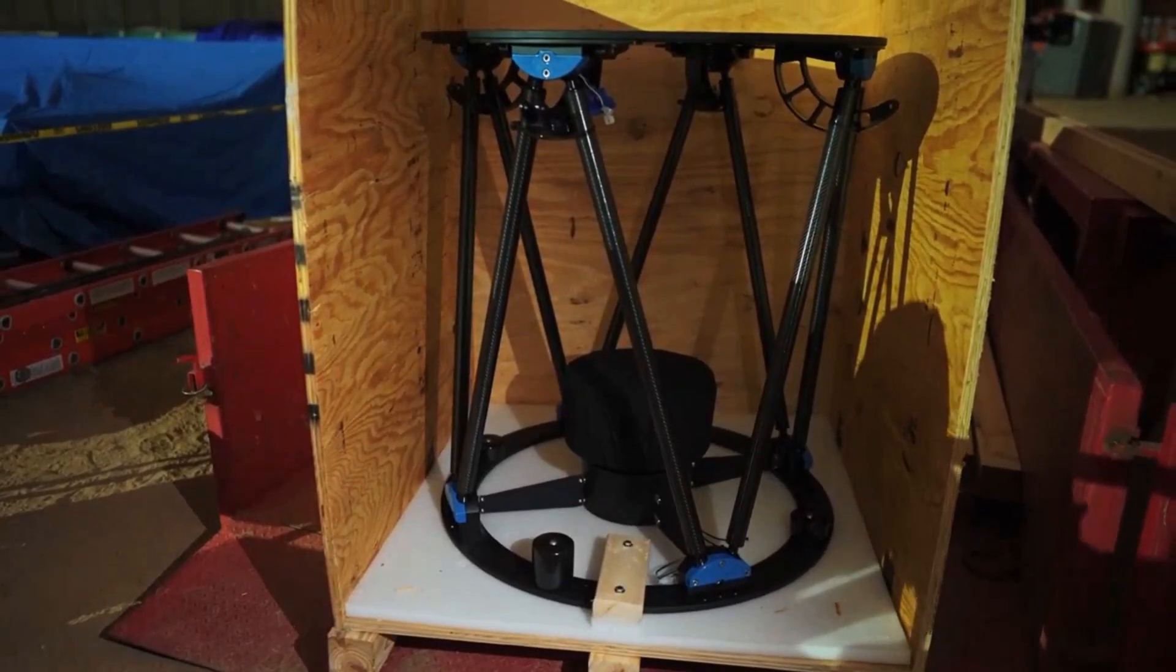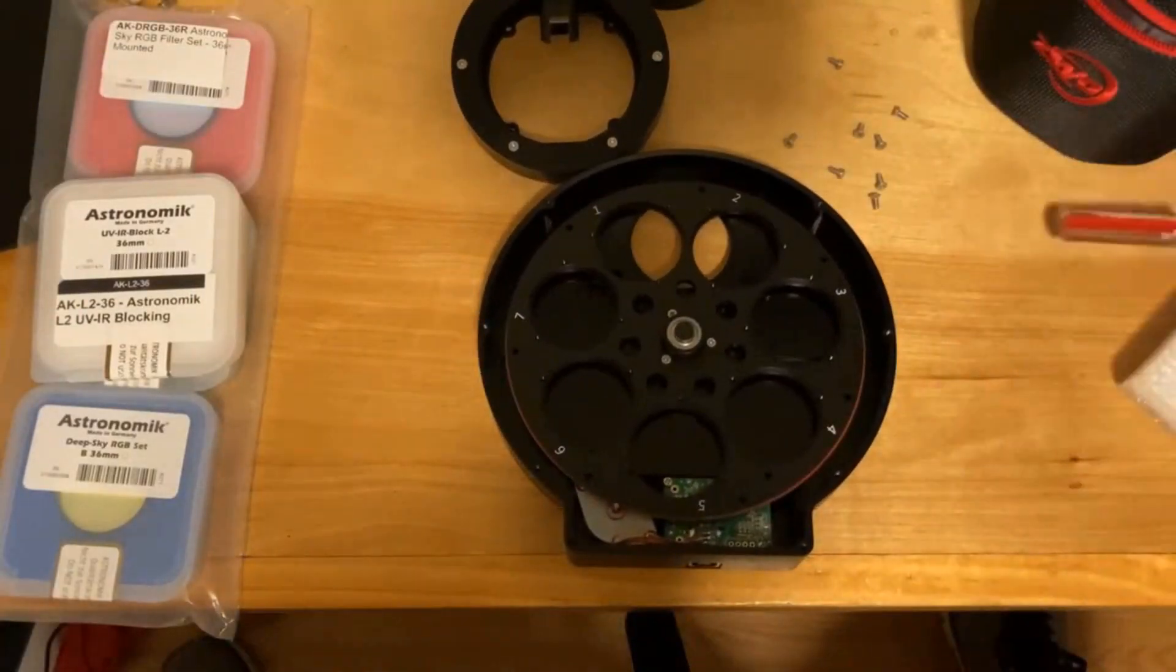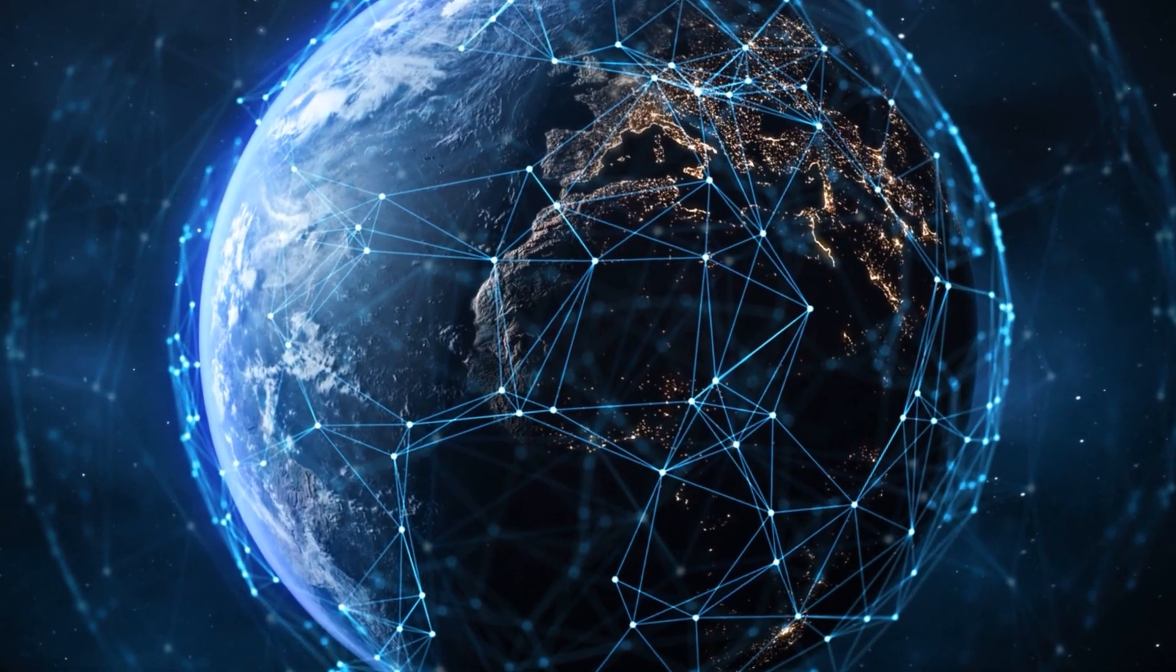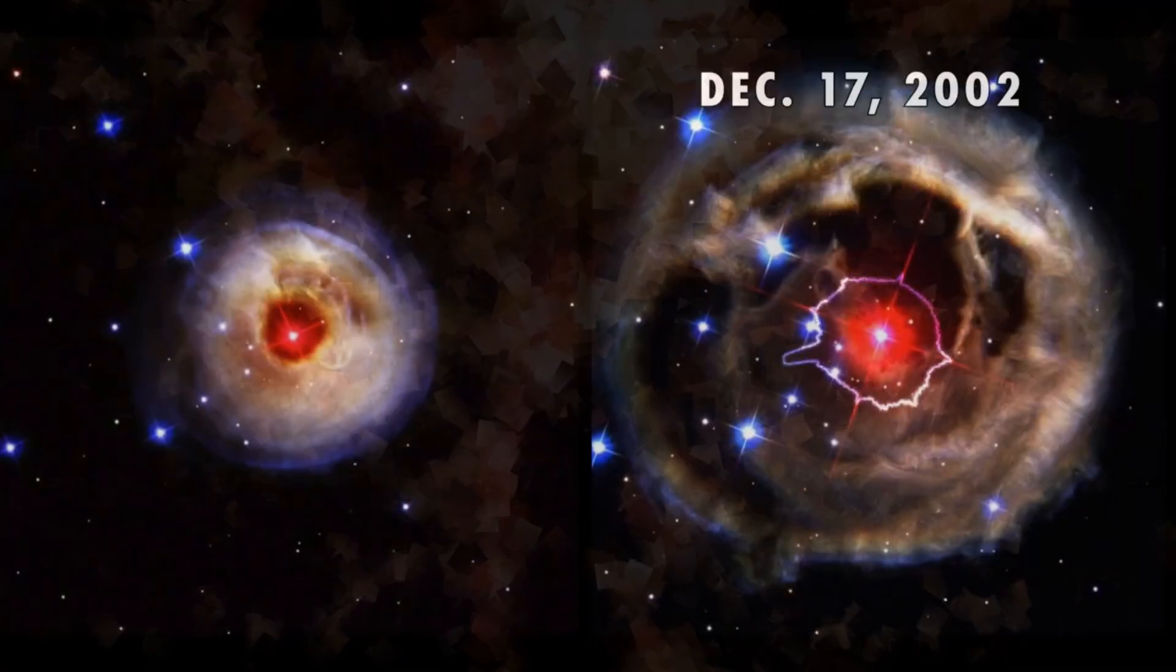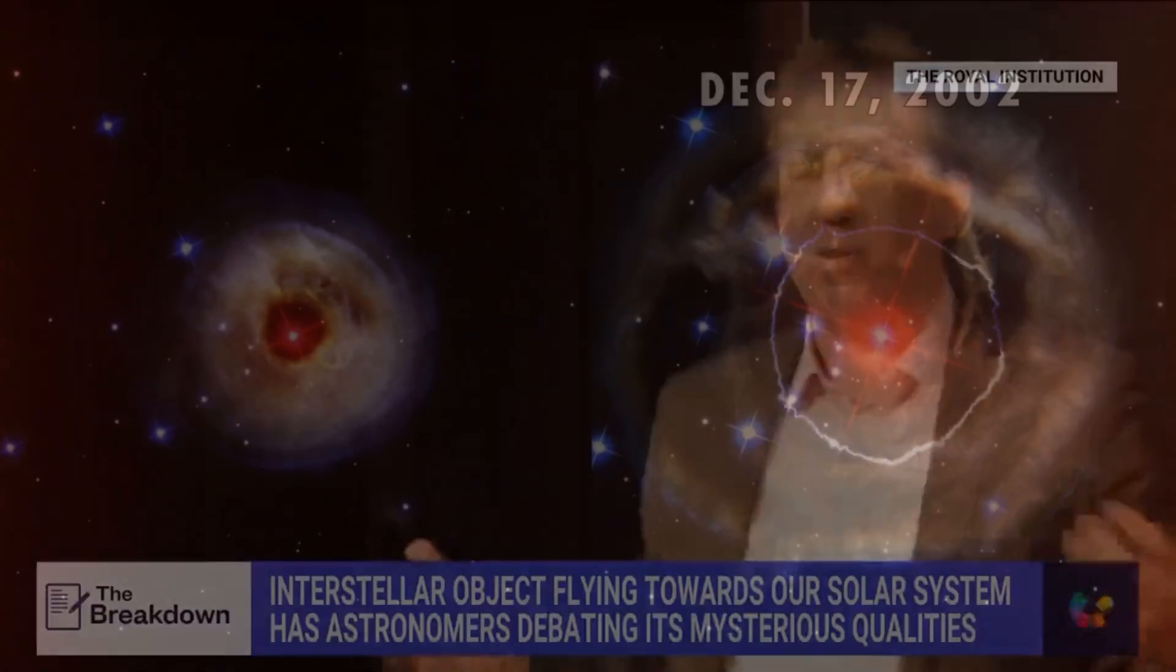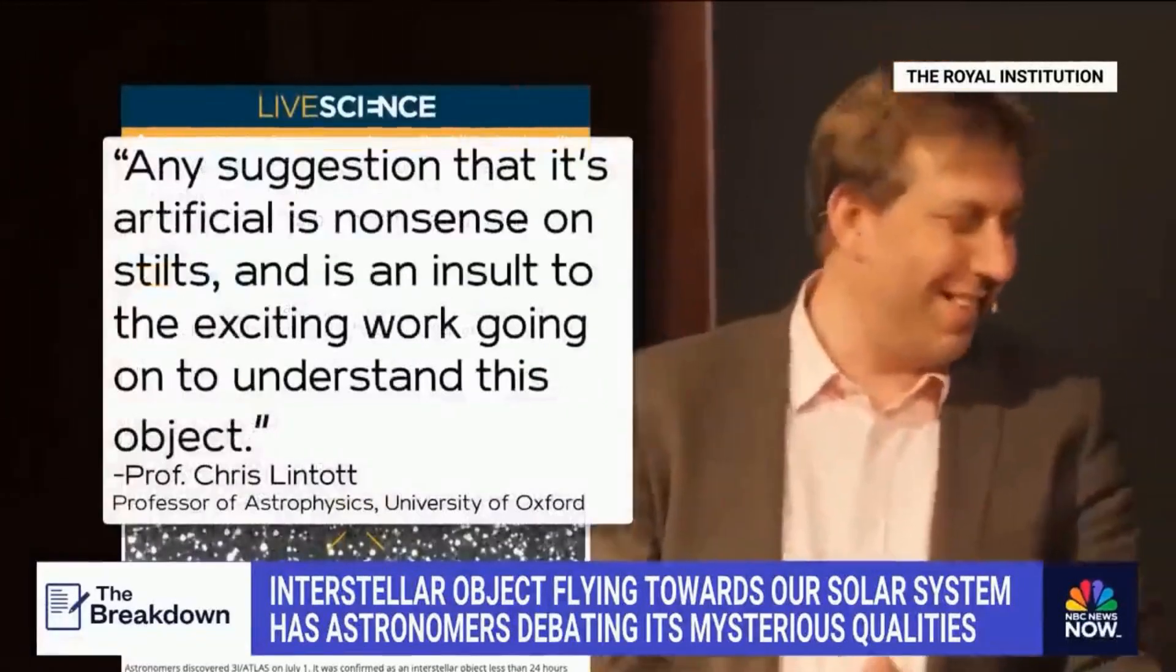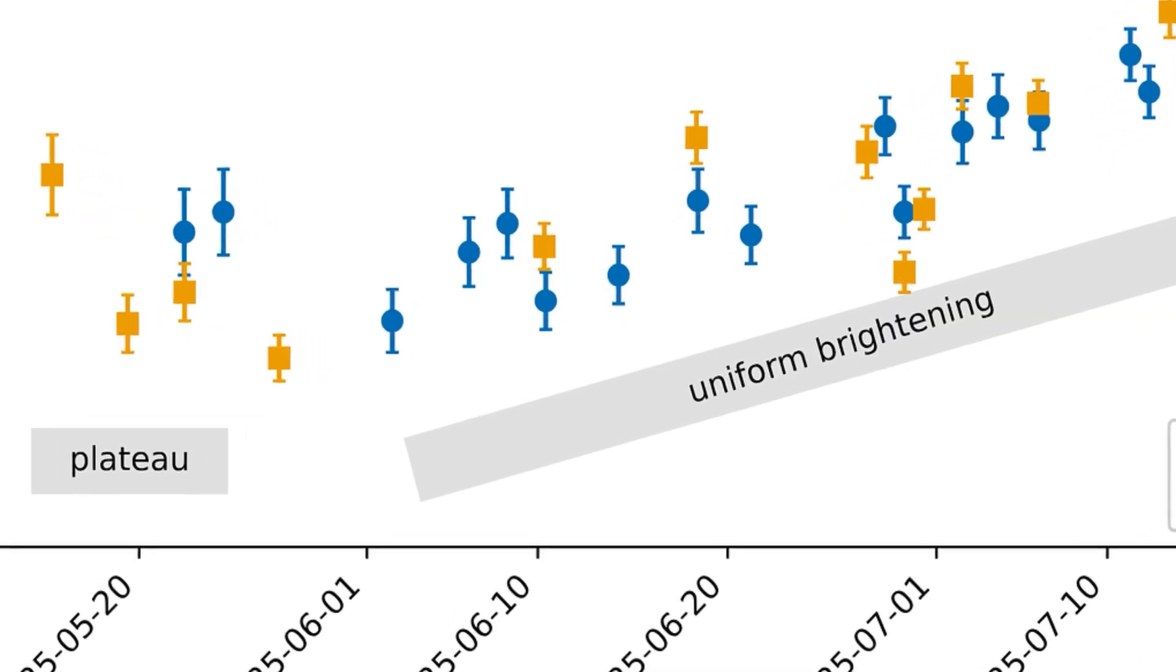Some observers scrambled to check their equipment, wondering if a new filter or a wider aperture could explain the anomaly, but the trend held across continents and telescopes. The usual suspects, distance, phase angle, exposure time, couldn't account for a surge this sharp. What's powering this runaway glow? That question is echoing through astronomy forums and professional circles alike, as every new data point only deepens the mystery.